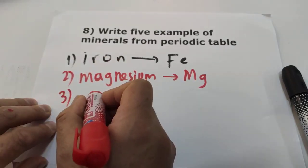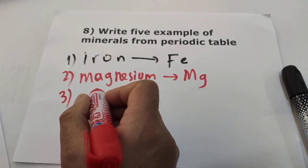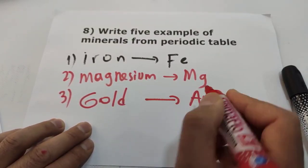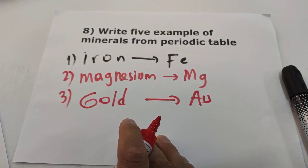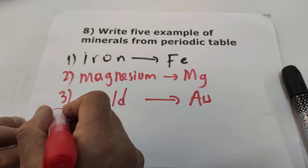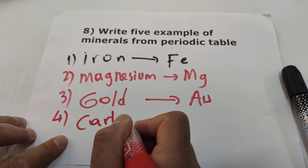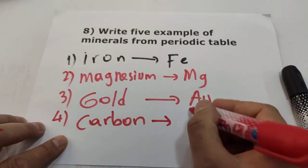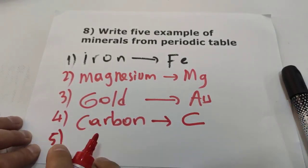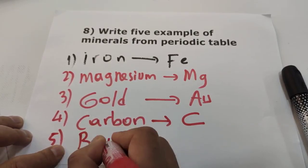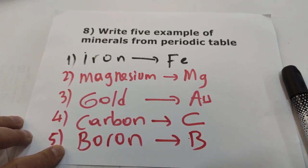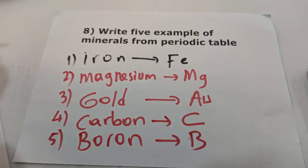Third example: gold — gold is a mineral. Fourth example: carbon — carbon is a non-metal but it is a mineral because carbon is solid. Fifth example: boron — boron is a metalloid, but it is also a mineral.